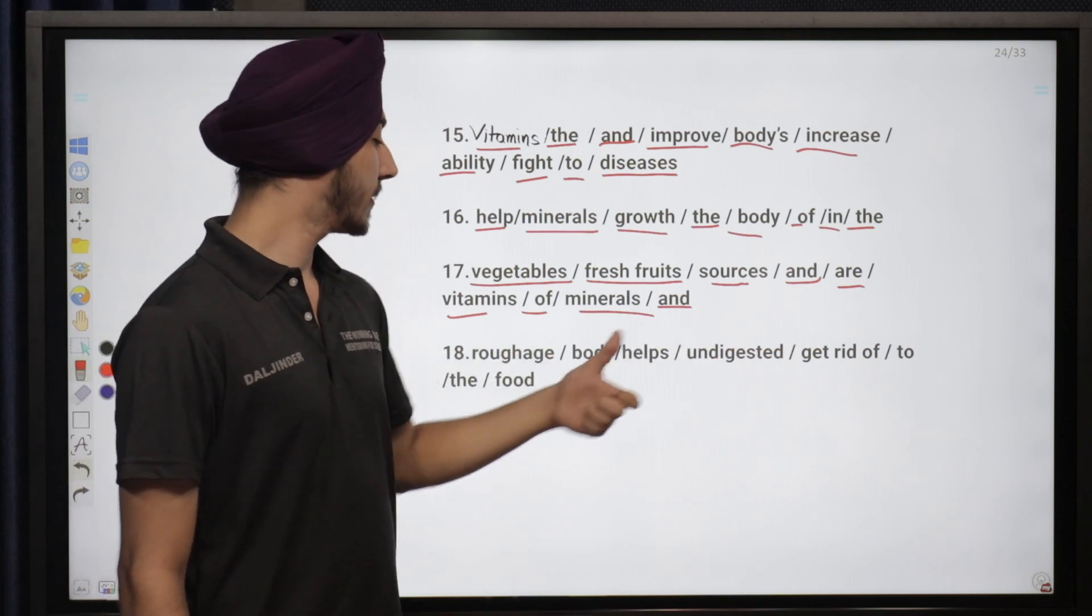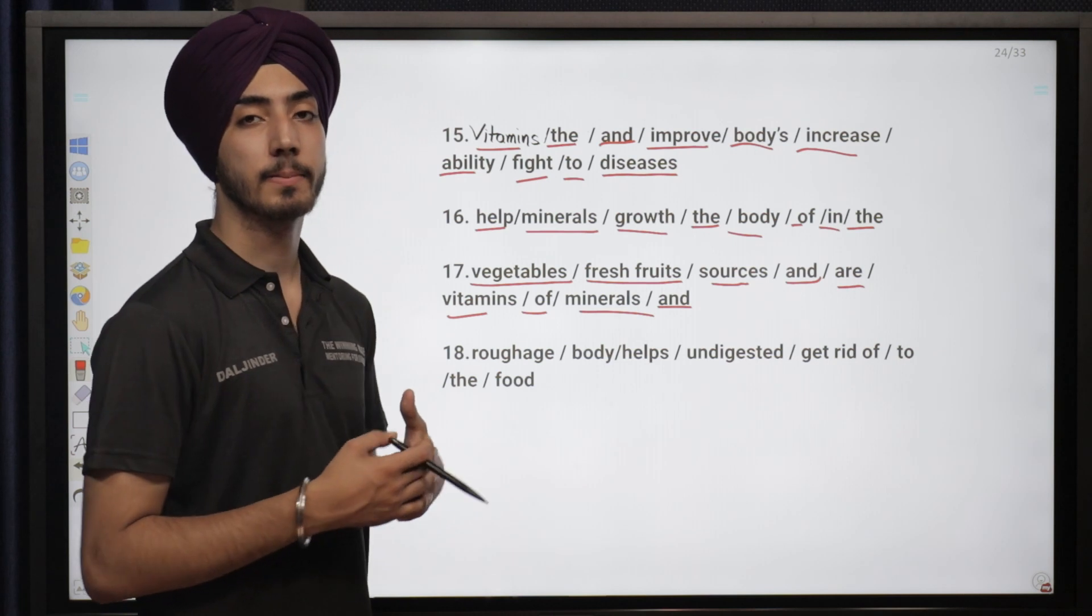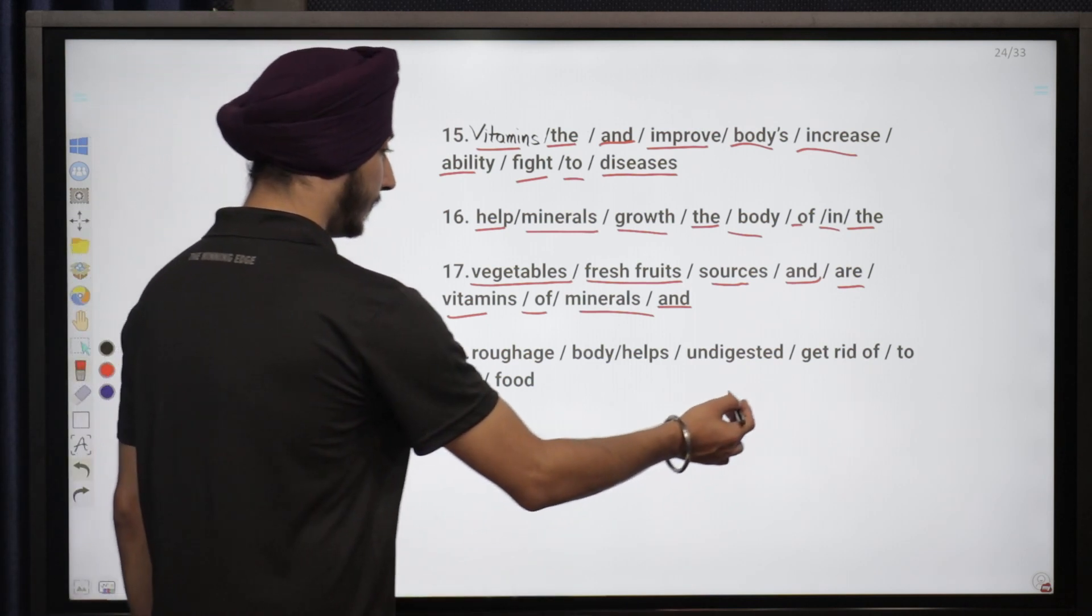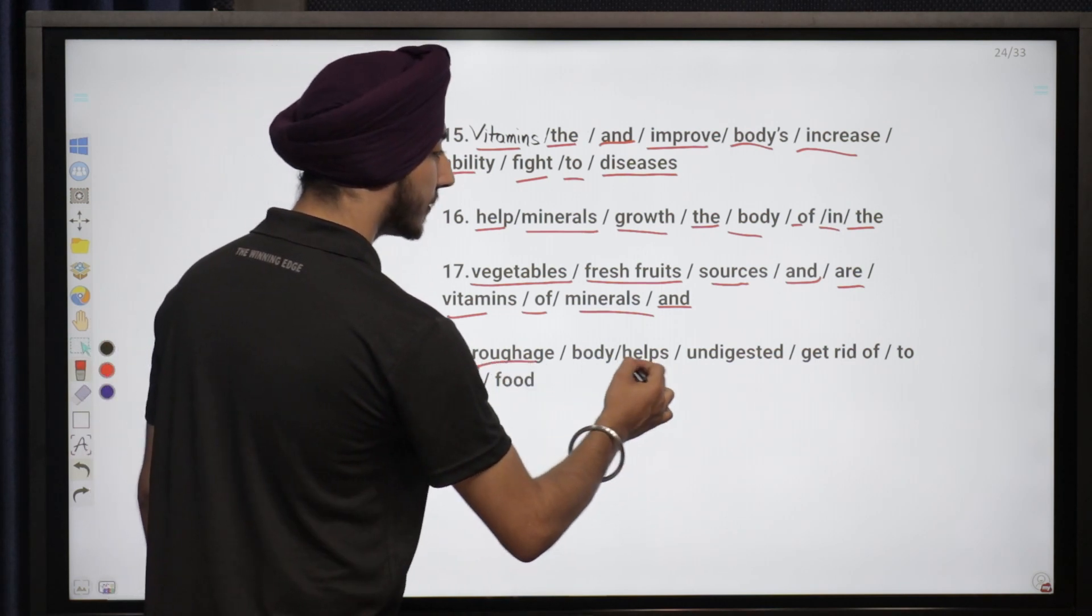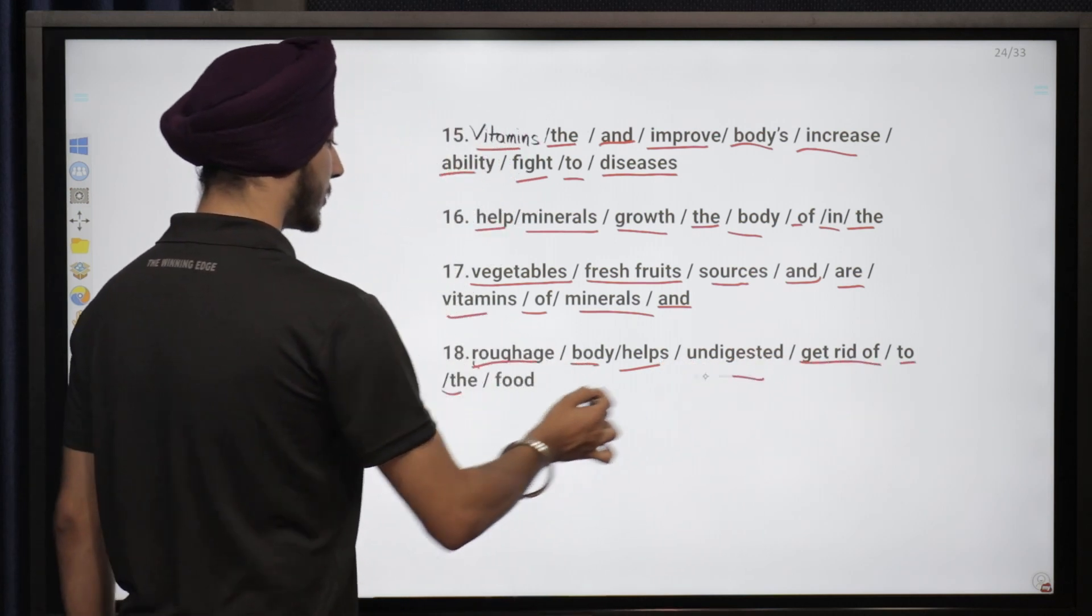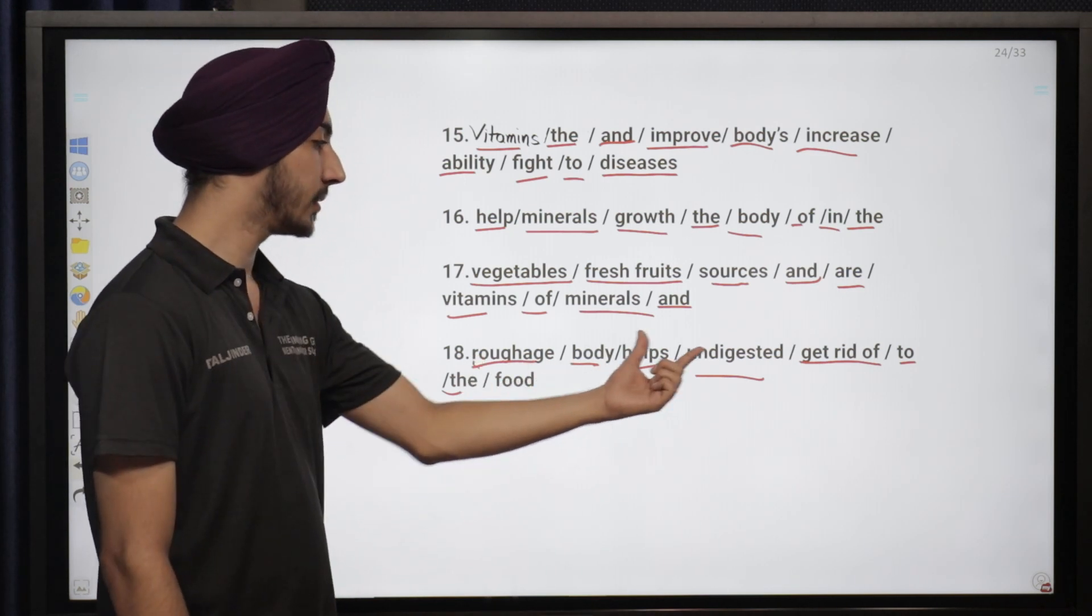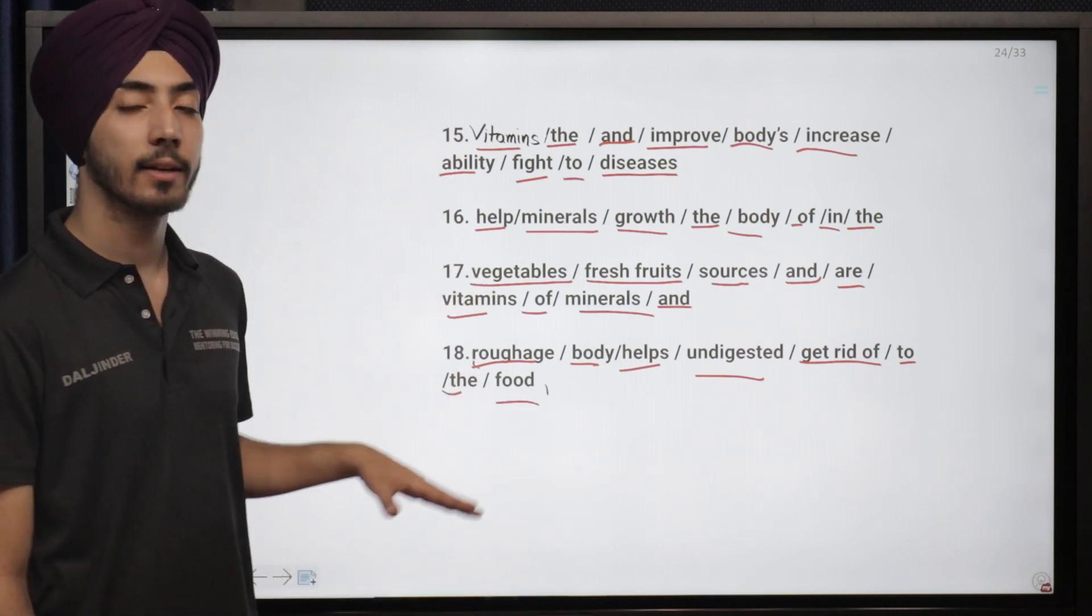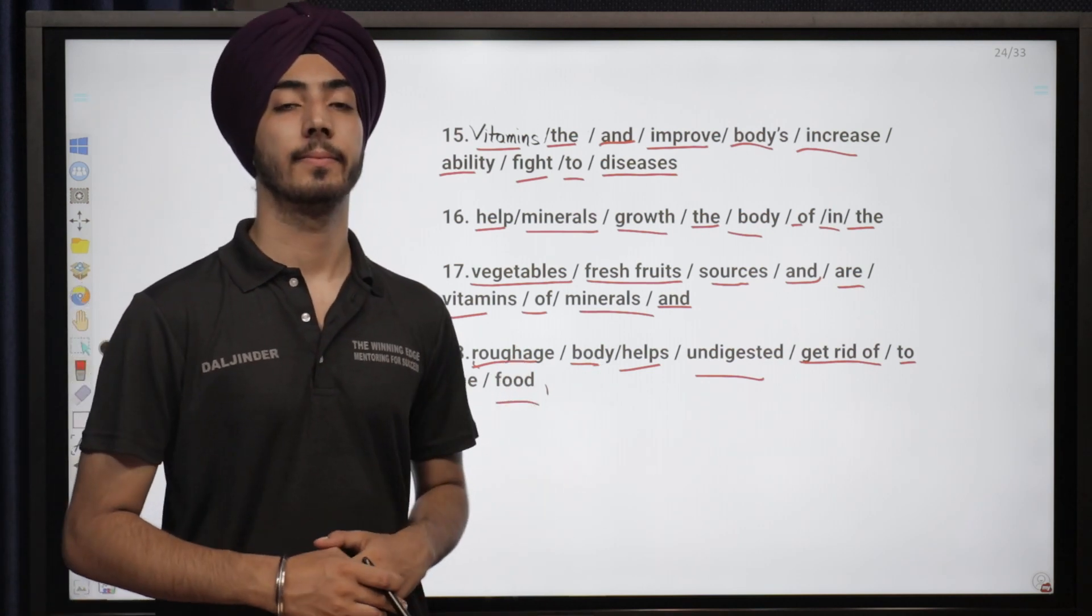Roughage body helps undigested get rid of to the food. Roughage, you know like all the salad we eat, contains a lot of roughage. It helps our body to get rid of undigested food. So that's exactly the sentence here. The roughage helps the body to get rid of undigested food. So this is your basic level of making the sentences out of jumbled words. Next we'll be doing the advanced level.